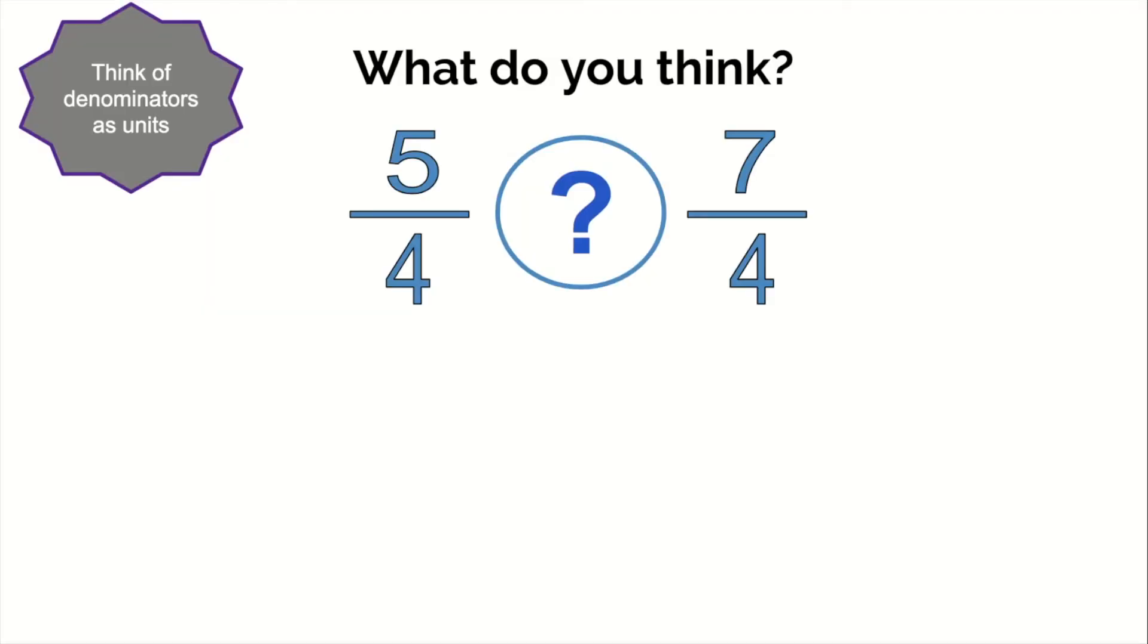What about now? Again, denominators are like units, and so we have fourths and fourths. The units are the same. That's like comparing grams to grams. So which one's greater? Five grams or seven grams?